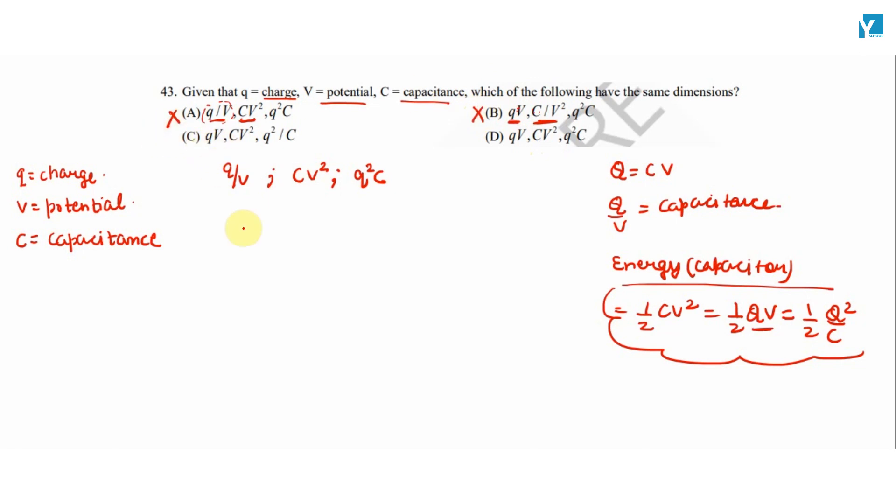Agar hum option C ko dekhe, option C mein hai QV which has the dimension of energy for half time hone chahiye. Hum yaha se dekh sakte energy stored in a capacitor ki three expressions hai. And CV square, CV square ki dimension ki energy ki hai. Q square by C, yes Q square by C ki dimension bhi energy ki hai. So in option C, all the quantities have the same dimension. So option C is the right answer.